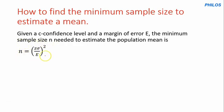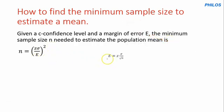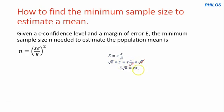This formula was derived from the formula for margin of error. Remember, the margin of error e is equal to z times standard deviation over root n. To make n the subject, the LCM here is root n, so let's multiply both sides by root n. When we multiply both sides by root n, we have root n times e equals z times standard deviation. This root n cancels out, giving us e times root n equals z times standard deviation.